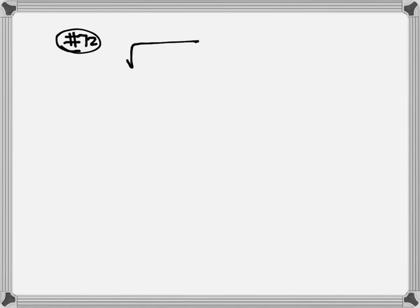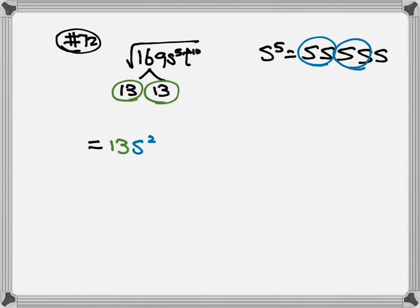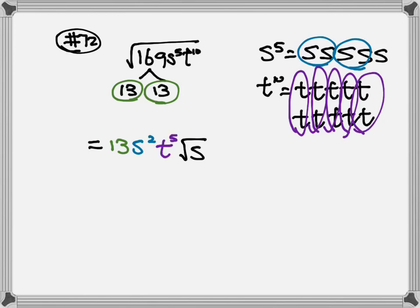Number 72: we have square root of 169s⁵t¹⁰. For 169, using a calculator gives 13, so √169 = 13 — that's a pair of 13, so 13 goes out. For s to the fifth power, write out all five s's. Looking for pairs: one pair, two pairs — that's s² going out — and one s stays inside the root. For t¹⁰, write out all ten t's: one pair, two, three, four, five — all t's go out as t⁵.